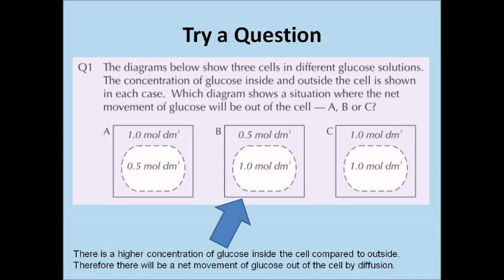The answer is B, because there is a higher concentration of glucose inside the cell compared to outside. Therefore, there will be a net movement of glucose out of the cell by diffusion, because the glucose will move from a higher concentration to a lower concentration — just down its concentration gradient.